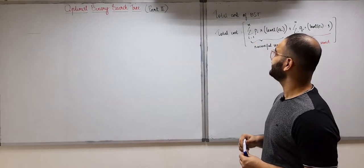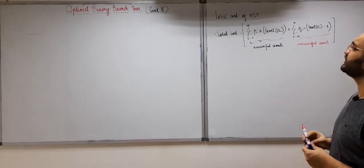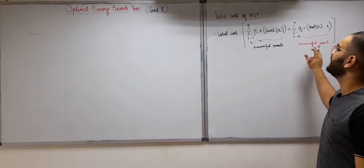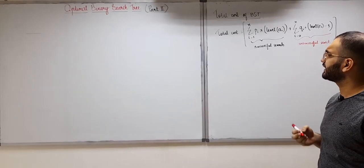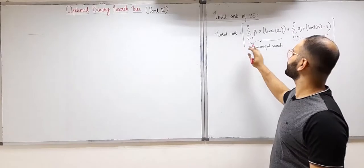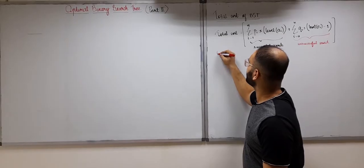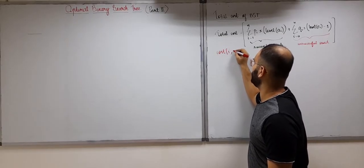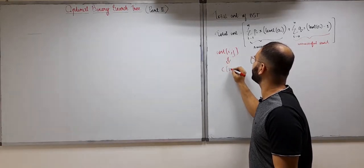So in the last video we stopped here — we came to know that the tree which minimizes the total cost is actually the optimal binary search tree. So now, to avoid confusion, I referred to this cost as the total cost in the previous video, but it can also be called the cost of i comma j, or in short form, c of i comma j.